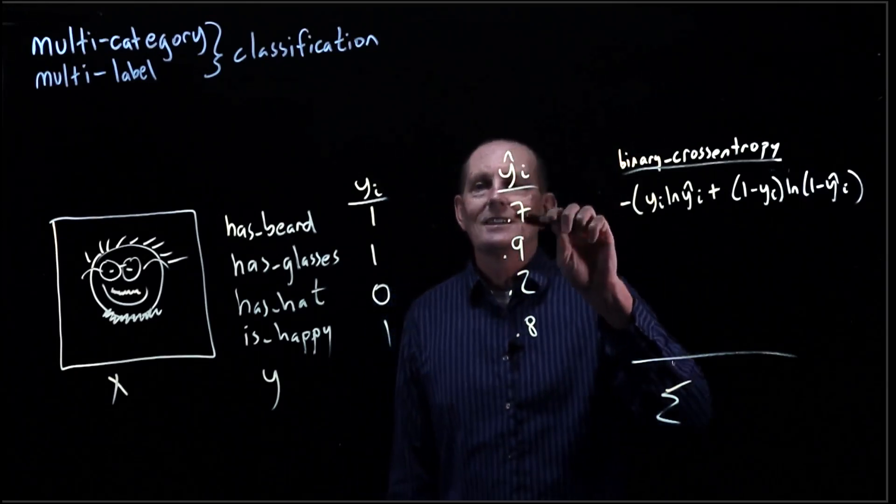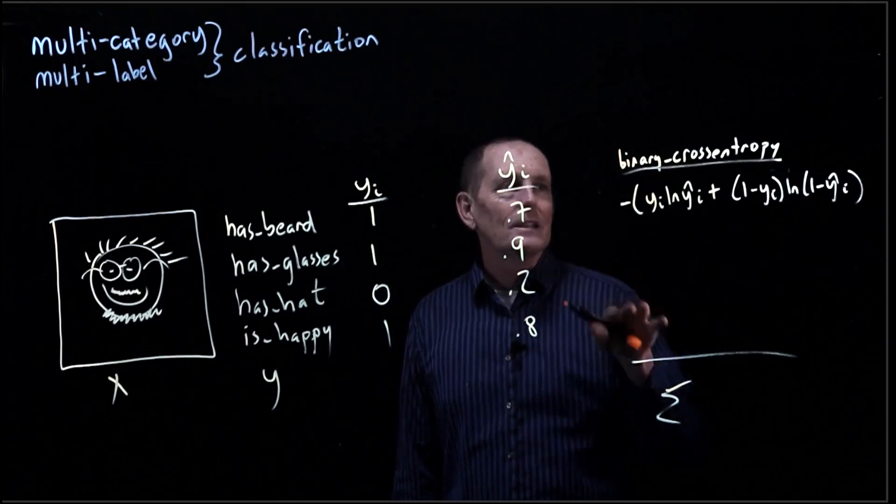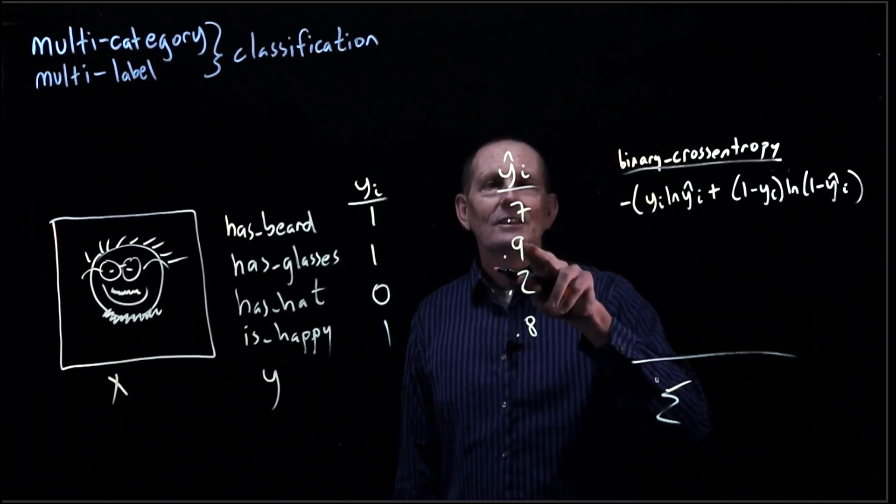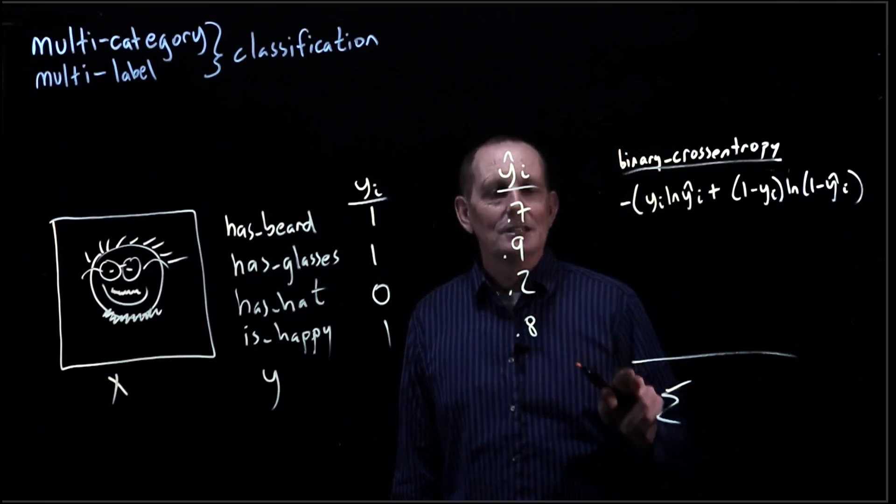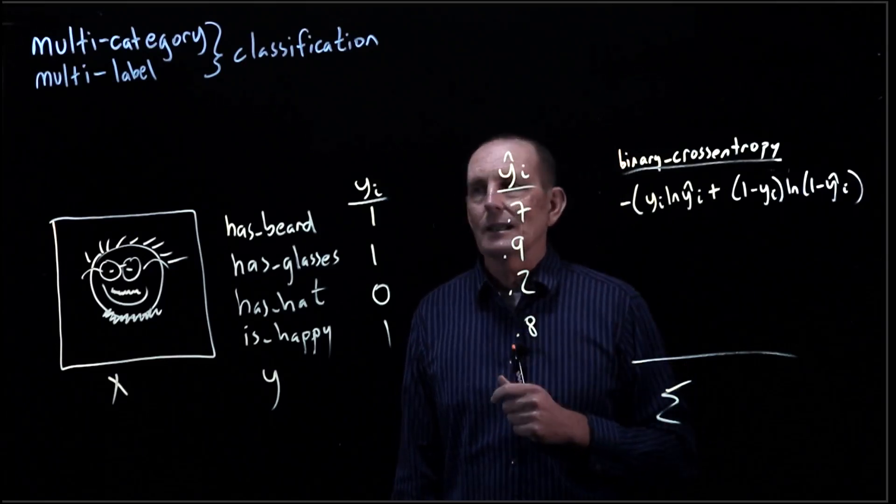So you can see if you increase y hat sub 1, that's going to decrease the loss. Increase this one, decreases the loss. Decreasing this one, decreases the loss. Increasing this one, decreases the loss. So as you're making it closer.